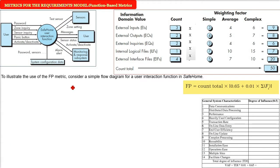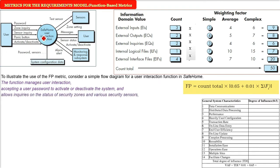In the function-based metrics, this is an example. We want to use the function point metric. This is a simple flow diagram for a user interaction function in a safety, security, safe home system. So there is hardware where you are going to key in and there will be software inside it. So the function manages user interaction. What is the user interaction? For example, accepting a user password in order to activate or deactivate the system. This allows inquiries on the status of the security zones and the various security sensors, whether they are working or not. And then displaying of prompting messages, also sending appropriate control signals to various components of the security system.